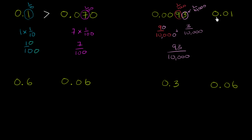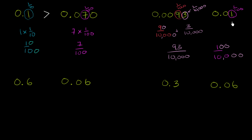Now let's think about 0.01. This 1 right over here is in the hundredths place, so it literally represents one hundredth. How can we compare one hundredth to 93 ten-thousandths? Well, what is one hundredth in terms of ten-thousandths? If you multiply both the numerator and denominator by 100, you get 100 ten-thousandths is the same thing as one hundredth. So it becomes very clear: 100 ten-thousandths, or one hundredth, is definitely larger than 93 ten-thousandths.